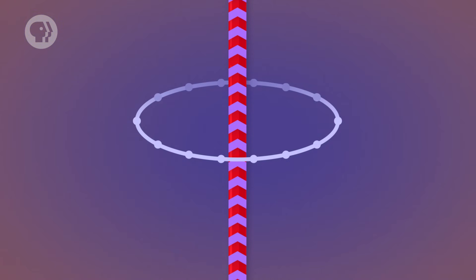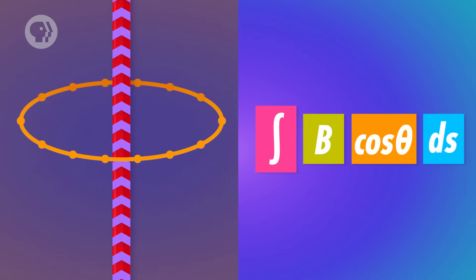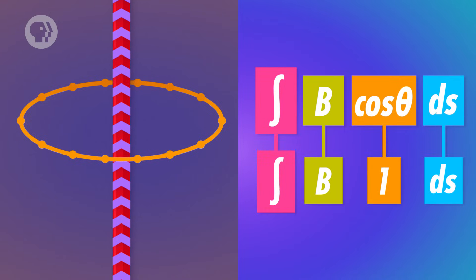But we can simplify this integral pretty easily. First, you'll notice that the magnetic field coming from our wire is parallel to the circle at every point. So the angle theta is zero, and the cosine of zero is one.